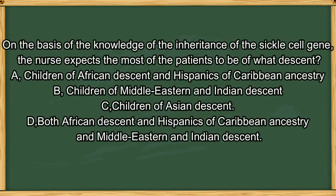Question number 1. On the basis of knowledge of inheritance of the sickle cell gene, the nurse expects most patients to be of what descent? A. Children of African descent and Hispanics of Caribbean ancestry. B. Children of Middle Eastern and Indian descent. C. Children of Asian descent. Or D. Most African descent and Hispanics of Caribbean ancestry and Middle Eastern and Indian descent.